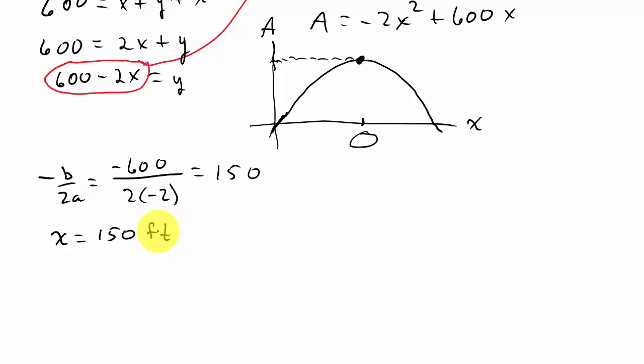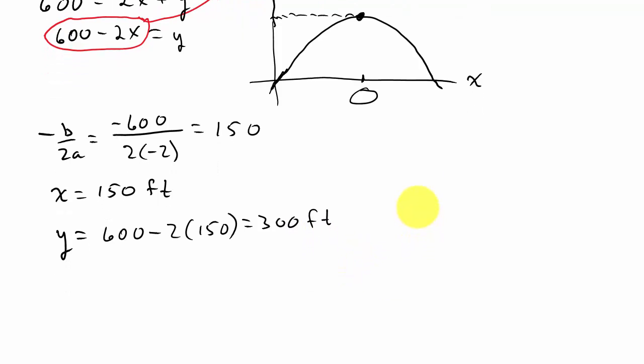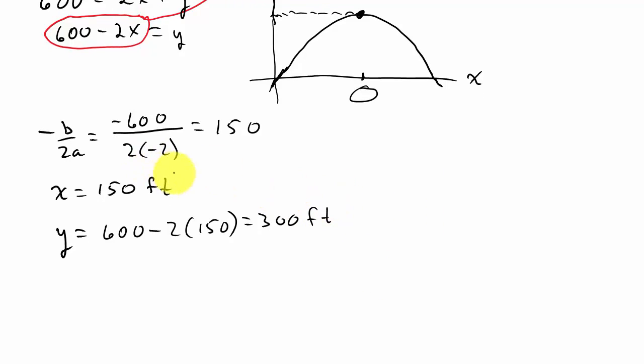And now to find my Y coordinate. Well, Y is equal to, well here I can find Y. I just take the 150 and plug it in here for X. So Y is 600 minus 2 times 150, which is going to be 300 feet. So here's my dimensions, it's going to be 150 by 300.